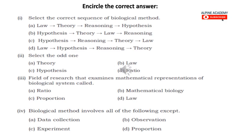Third question: the field of research that examines mathematical representations of biological systems is called what? We have to tell about that field which examines mathematical representations. The answer is mathematical biology. So the answer is B.